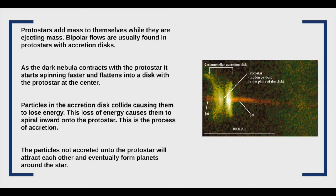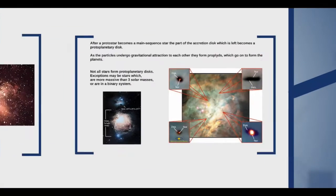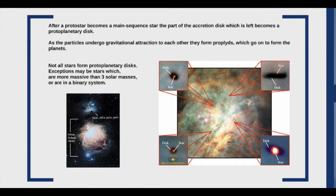Some of the accretion disk may be left over, and that remaining part of the disk can form planets. After the protostar becomes a main sequence star, the disk becomes more stable and starts to clump together, and those clumps form planets.